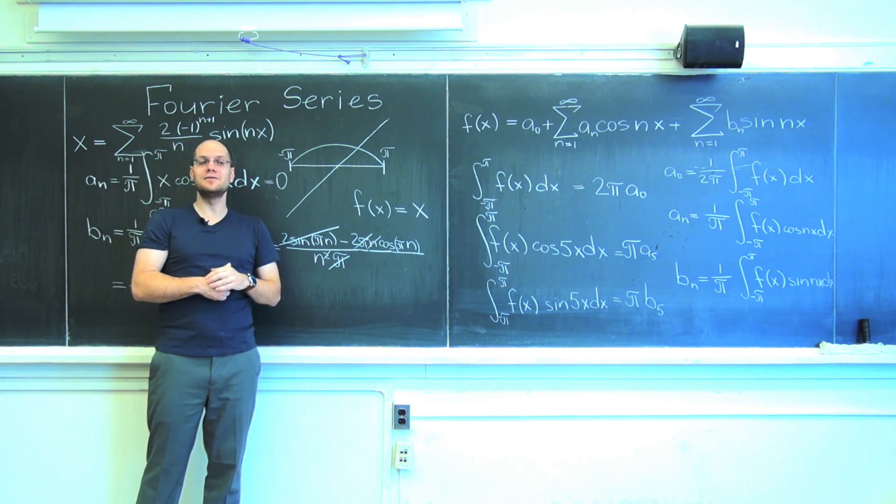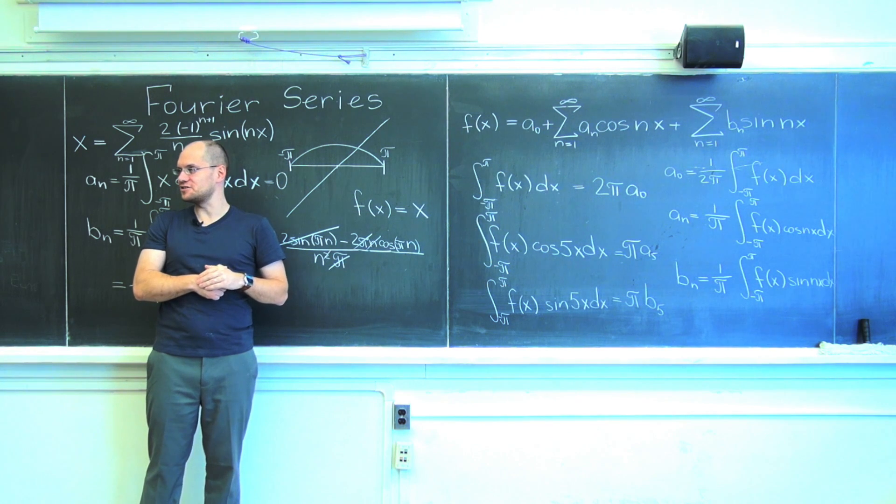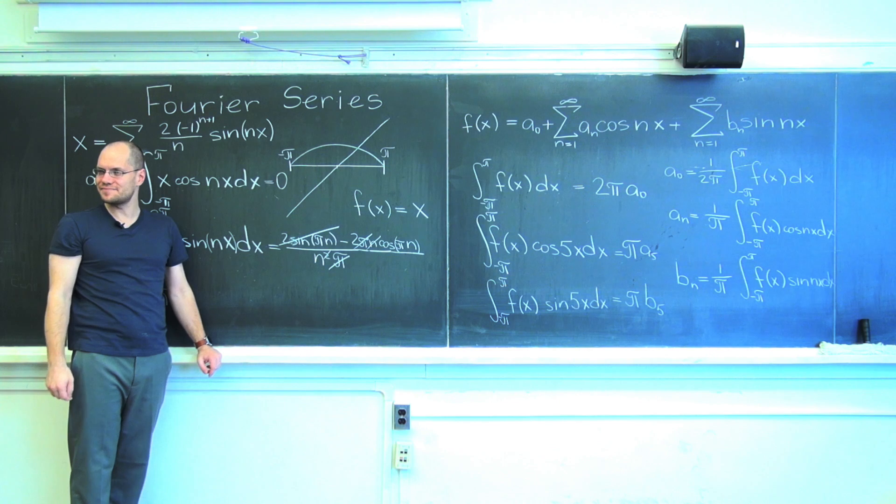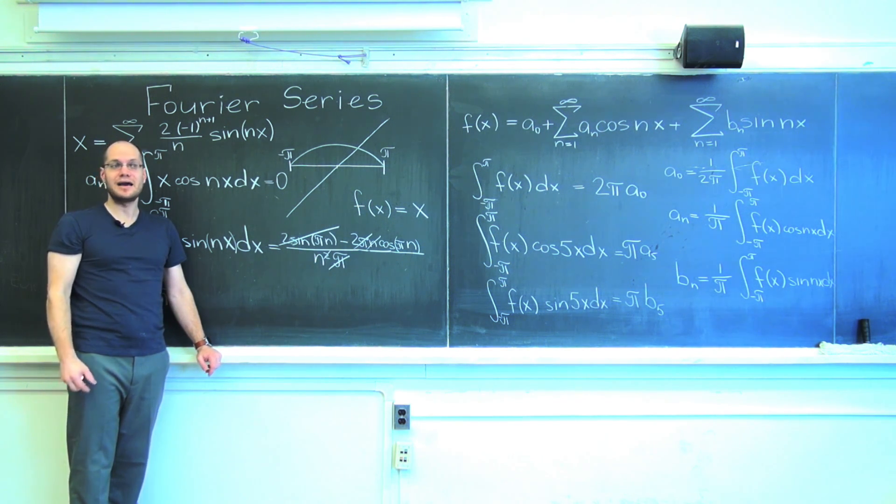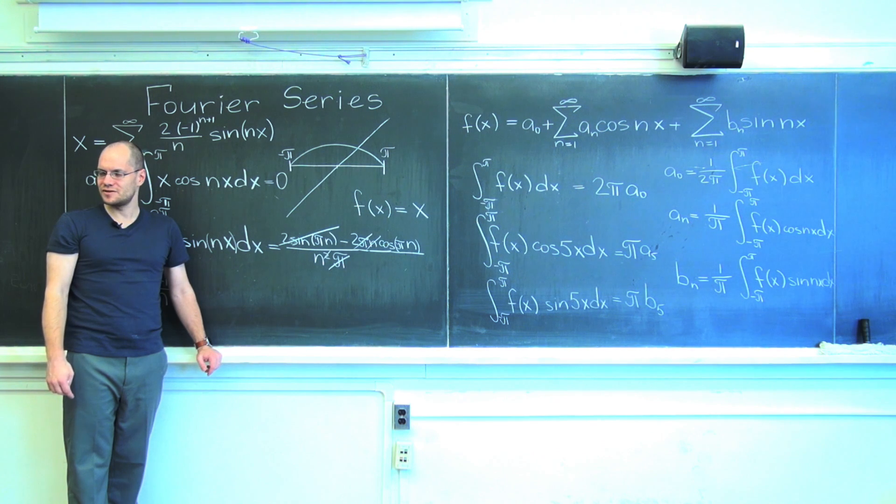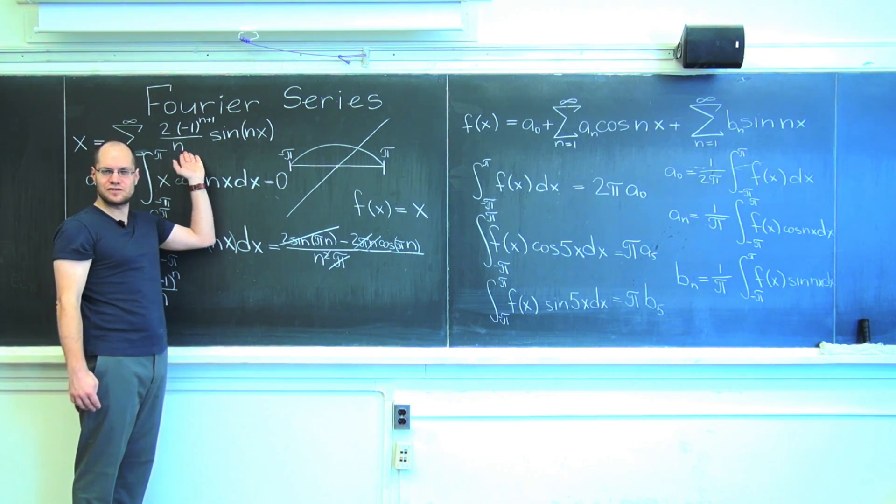Well, in that case, they'll decay exponentially. You would have e to the n on the bottom or something like that. That's what would happen. And so then it would be a very fast convergence series.